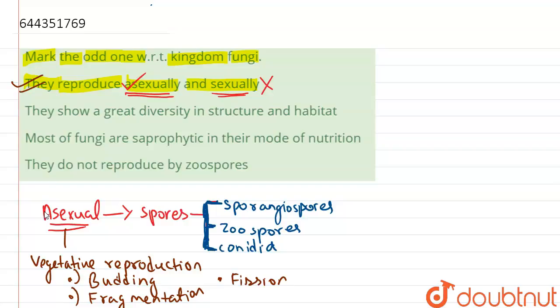And we see other options: they show great diversity in structure and habitat, that is true. Most of the fungi are saprophytic, that is also true in nutrition. They do not reproduce by zoospores. So I hope this answers the question, thank you.